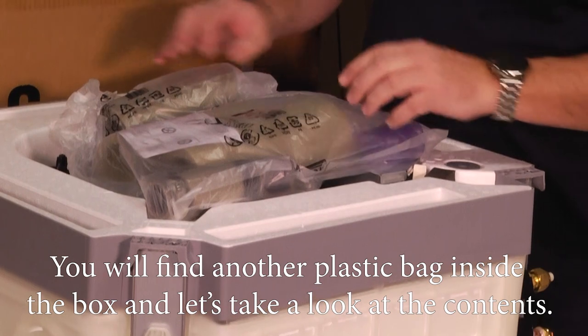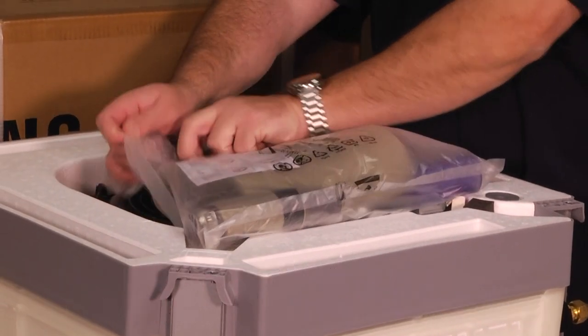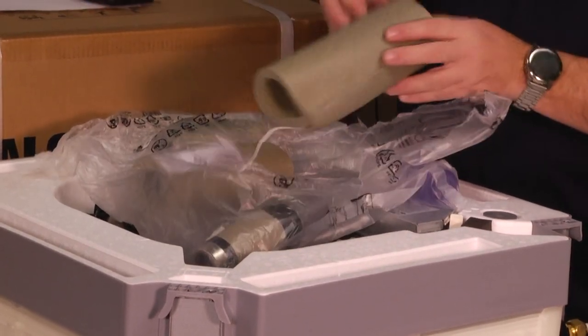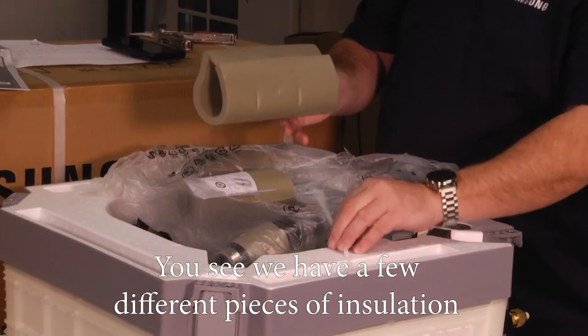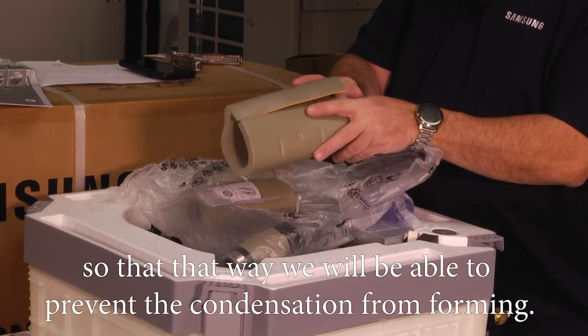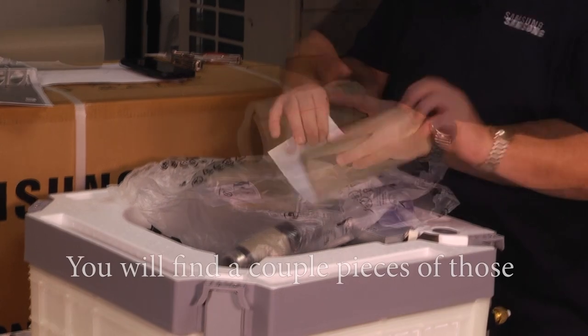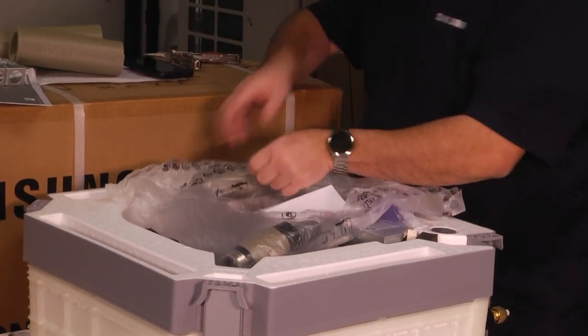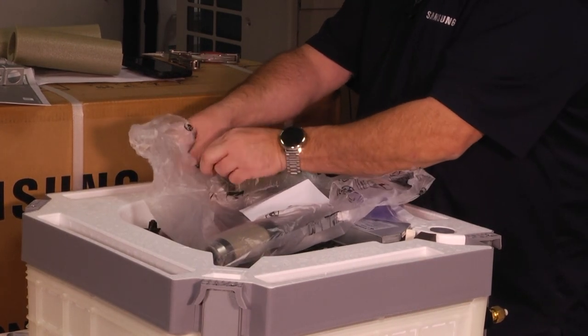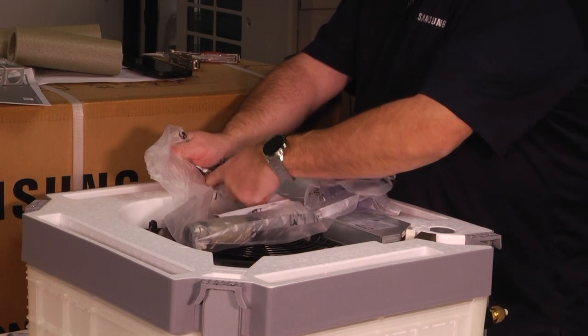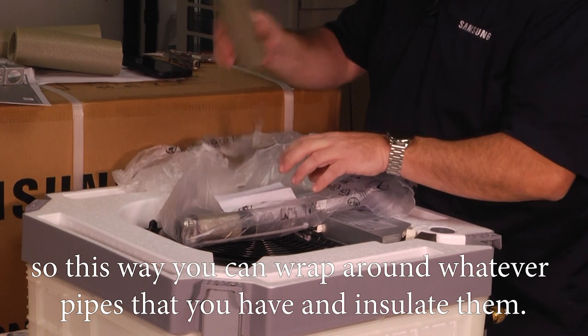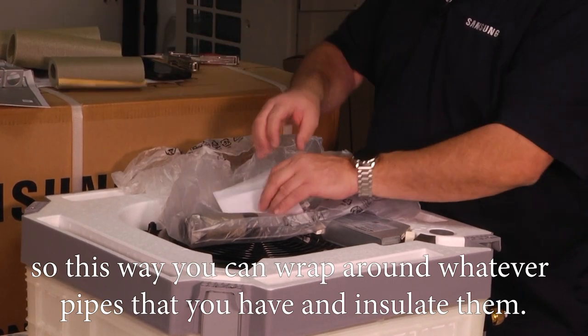You'll find another plastic bag inside the box. You see we have a few different pieces of insulation which we're going to wrap around our pipes so that we'll be able to prevent condensation from forming. You'll find a couple pieces of those and a third piece in the top of this bag so you can wrap around whatever pipes that you have and insulate them.